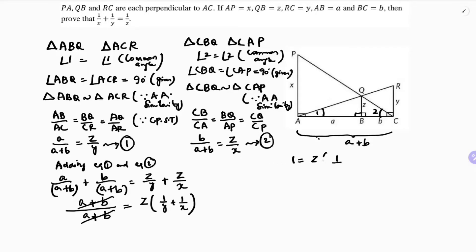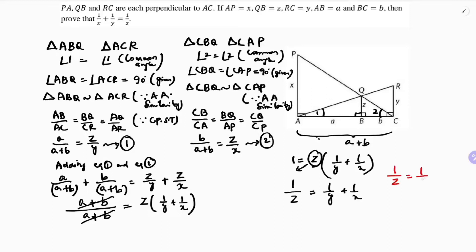So we have proved that 1/z equals 1/x + 1/y. To summarize: start with the small triangle and then the big triangle, taking them in order ABQ, ACR, then from C take CBQ and CAP.